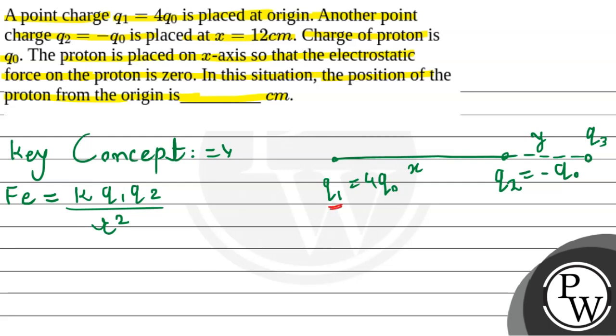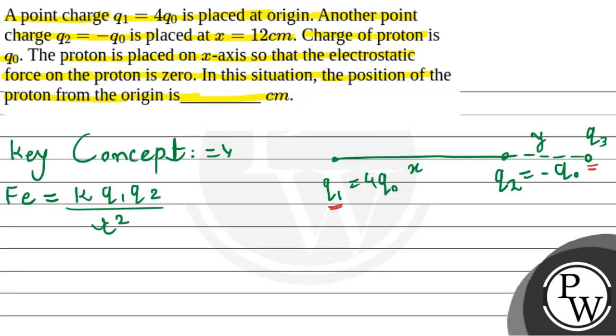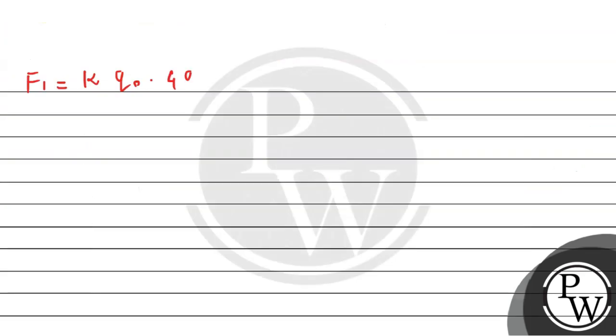First, if I use Q1, the force will be on Q3. I will write it down. So it will be F1 equals to K times Q0 into 4Q0 (what is the charge of Q1? 4Q0), so 4 times Q0 divided by... Now I have to see the distance.